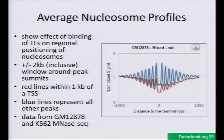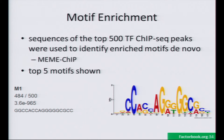We also provide profiles of average nucleosome positioning, derived from MNase-seq data for GM12878 and K562, split again into proximal and distal, where proximal is within 1KB of a TSS. We also run MEME-ChIP on the top 500 peaks and generate the top five logos, giving you information like: for instance, this is the top motif — out of the top 500 ChIP-seq peaks, 84% had this sequence — along with the E-value from MEME-ChIP and the consensus sequence.